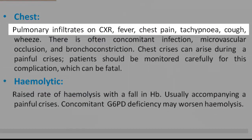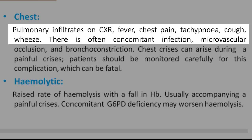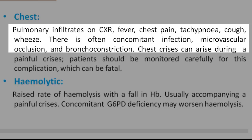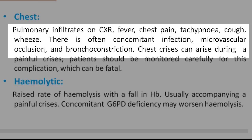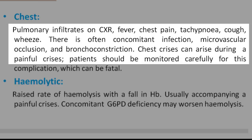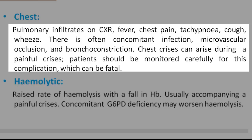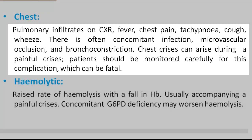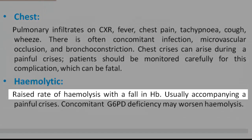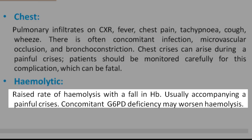Chest crisis: pulmonary infiltrates on CXR. Fever, chest pain, tachypnea, cough, and wheeze. There is often concomitant infection, microvascular occlusion, and bronchoconstriction. Chest crisis can arise during a painful crisis. Patients should be monitored carefully for this complication, which can be fatal. Hemolytic crisis: raised rate of hemolysis with a fall in HB, usually accompanying a painful crisis. Concomitant G6PD deficiency may worsen hemolysis.